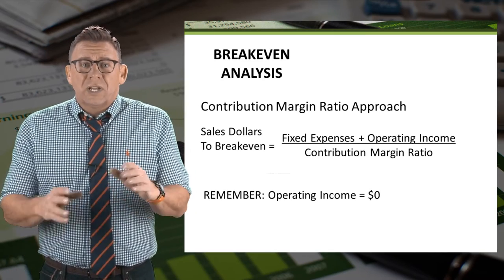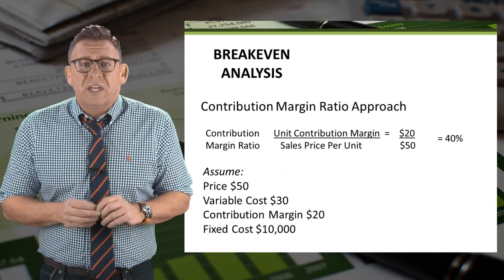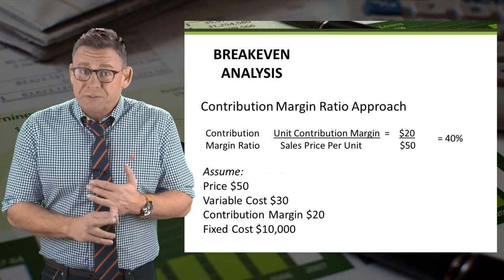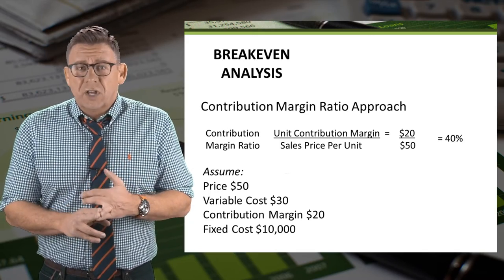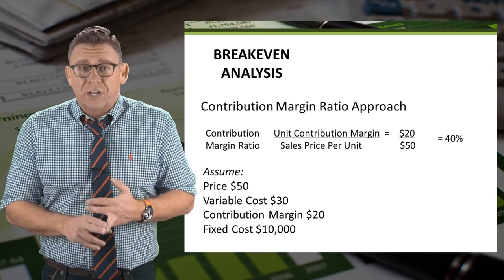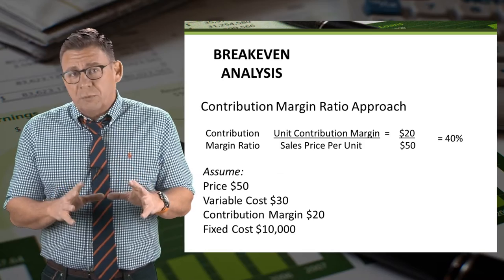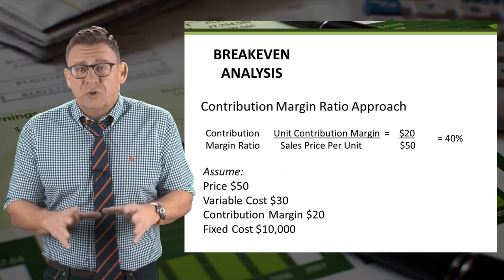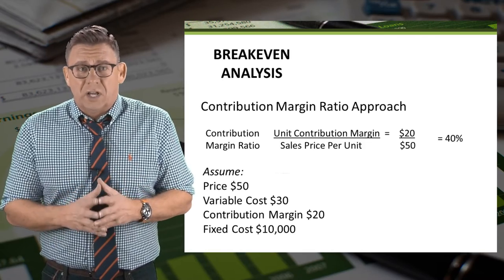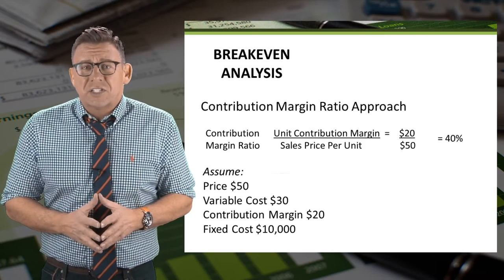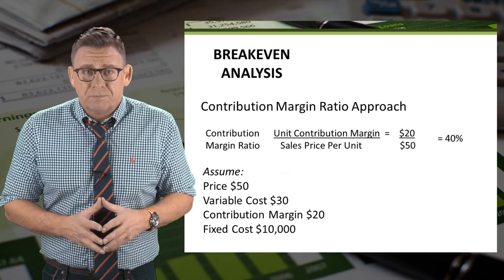So let's assume the following data: price is $50, variable cost is $30, therefore our contribution margin per unit is $20, and the fixed costs are $10,000.